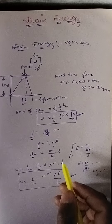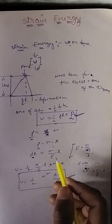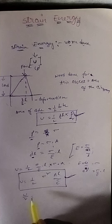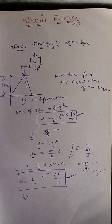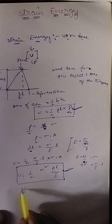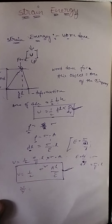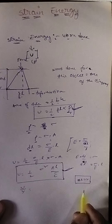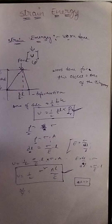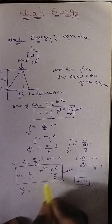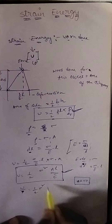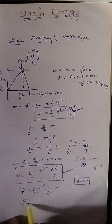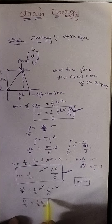Now coming to the modulus of resilience. The modulus of resilience is nothing but strain energy per unit volume. It is denoted as U/V, where V is the volume. Since volume V equals A × L, we substitute A × L into the formula.